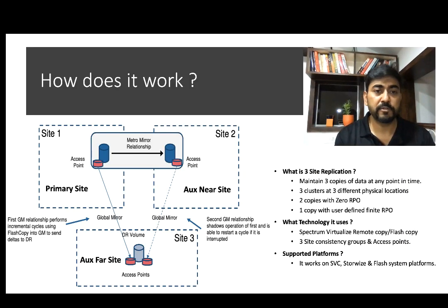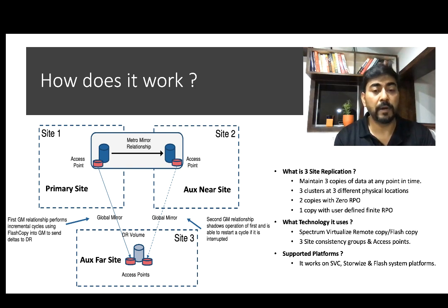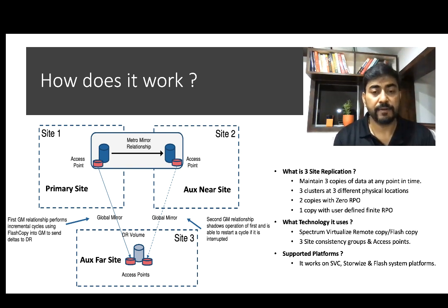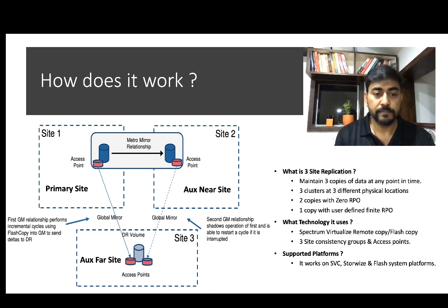Let's look at how the solution works. There are three sites having a Spectrum Virtualize cluster system at each location: the primary site or master site, the aux-near site or bunker or near DR site, and the aux-far site or DR site. The primary site and the aux-near site are at zero RPO because the volumes on these two sites are in a MetroMirror relationship, which is a synchronous replication technology of Spectrum Virtualize. The aux-far site is at a user-defined non-zero RPO because Global Mirror is used for replication to the aux-far site, which is an asynchronous replication technology of Spectrum Virtualize.